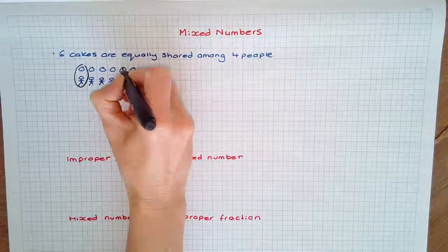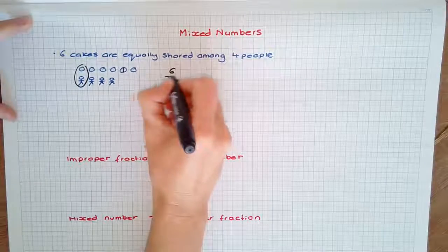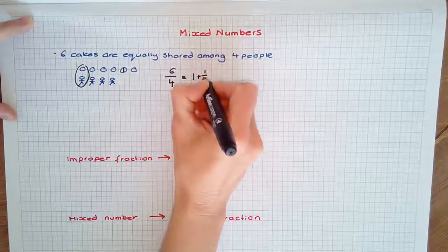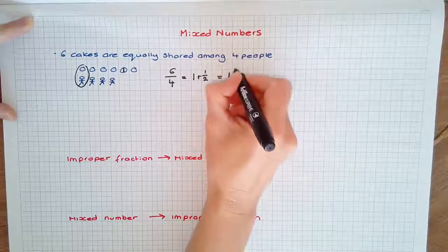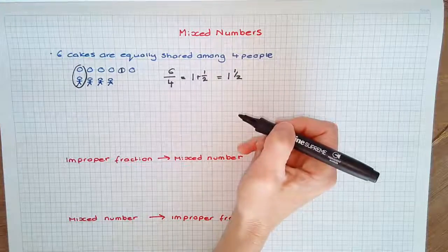That is, six cakes shared equally among four people—each would get one plus one-half of a cake. We can write it as 1½. This is called a mixed number.